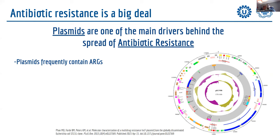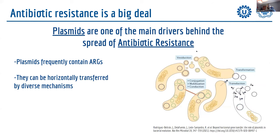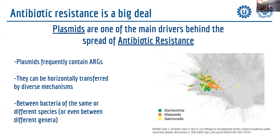We can say with high confidence that plasmids are one of the main drivers behind the spread of antibiotic resistance. These genomic elements frequently contain genes that provide resistance to antibiotics, and they can be horizontally transferred among bacteria by diverse mechanisms — among the same species, different species, and sometimes even different genera.